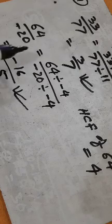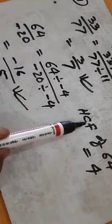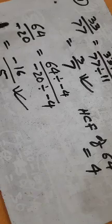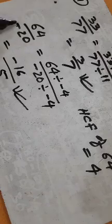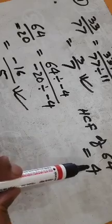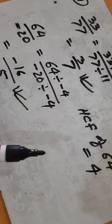In standard form, the HCF of numerator and denominator is used to divide. If the denominator is negative, we change the sign of the HCF and divide by the negative HCF to make the denominator positive.